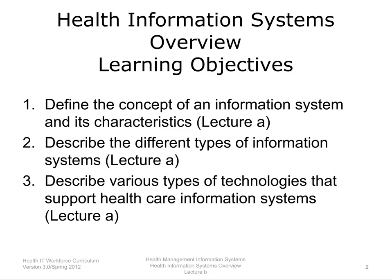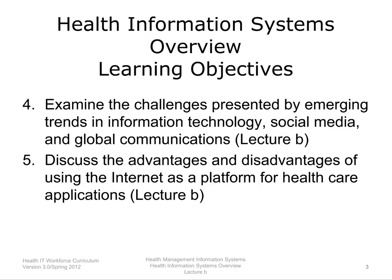The objectives for this unit, Health Information Systems Overview, are to: define the concept of an information system and its characteristics; describe the different types of information systems; describe various types of technologies that support healthcare information systems; examine the challenges presented by emerging trends in information technology, social media, and global communications; and discuss the advantages and disadvantages of using the Internet as a platform for healthcare applications.